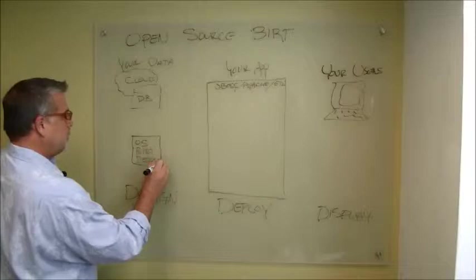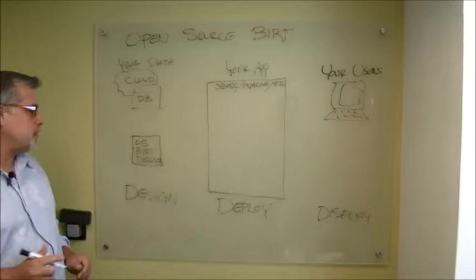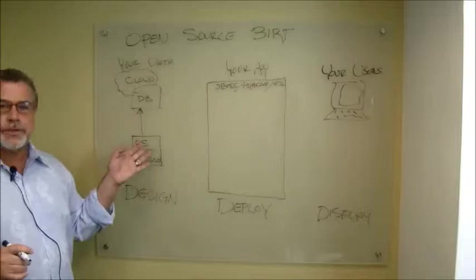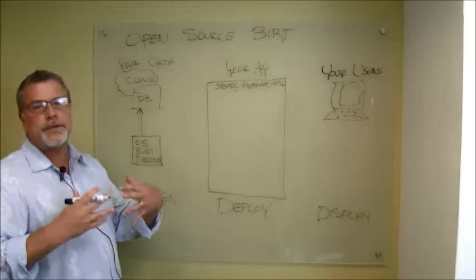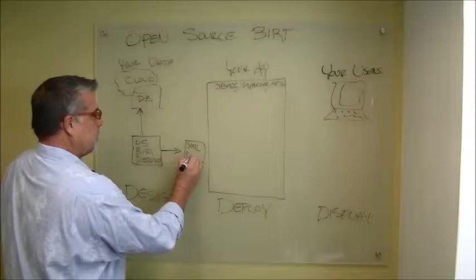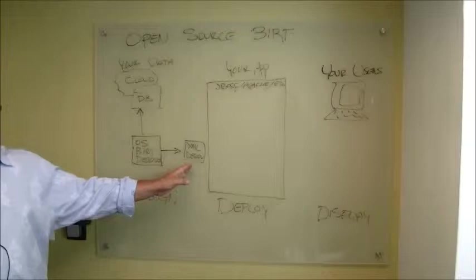So what you do first in the open source world is you take advantage of the freely available Eclipse-based design environment called the BERT Designer. This is the Eclipse version. So this is an Eclipse-based environment that you install on your desktop. You use it to create definitions or designs of the data that you want to format and put out to your users. So the first part of that process is we connect from the design environment and map in your data sources.